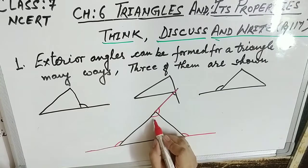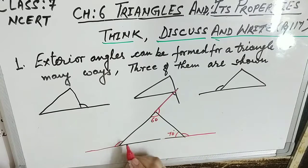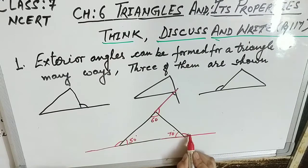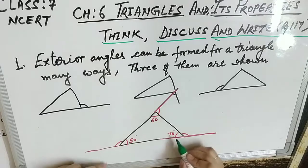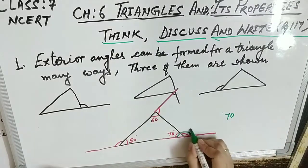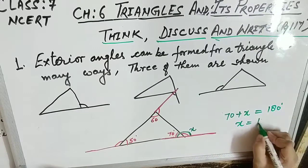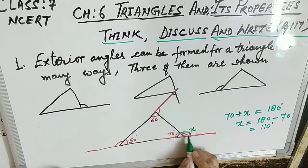Are the exterior angles formed at each vertex of a triangle equal? No. Suppose this angle is 60°, this is 70°, and this is 50°. The relation between exterior angle and interior angle: they are forming a linear pair, meaning they form a straight line. So if we take this angle as x, then 70 + x = 180°, which gives x = 110°.